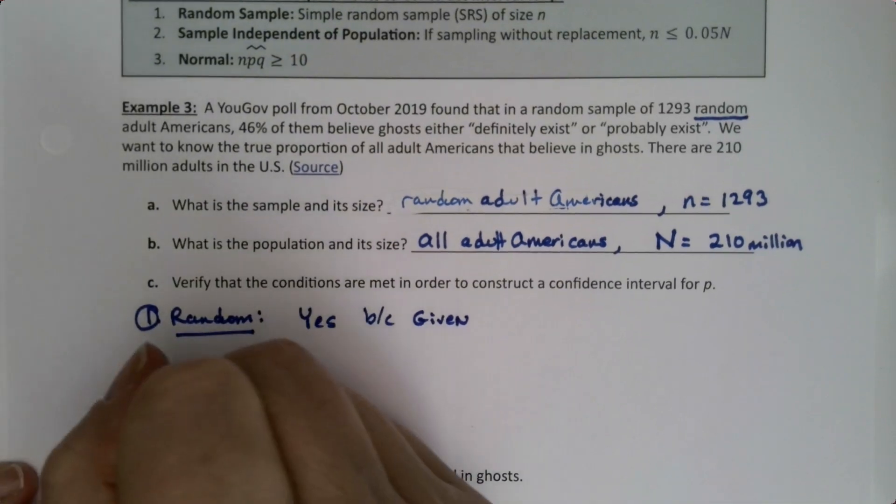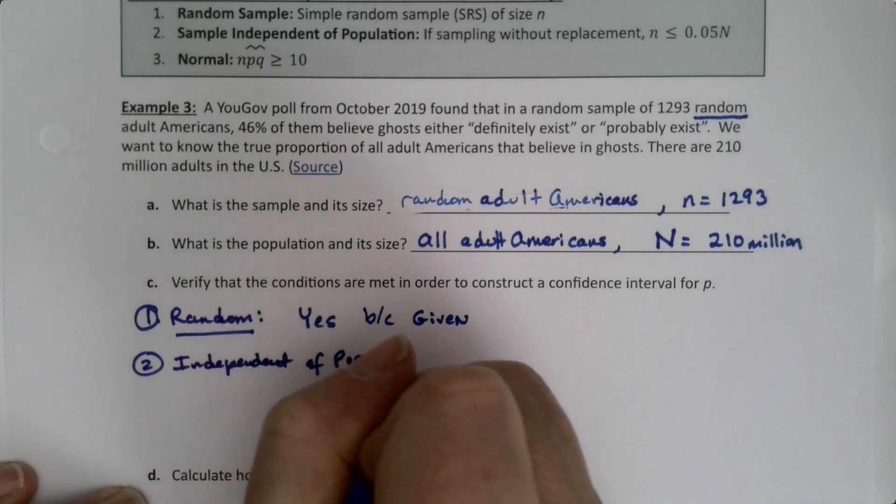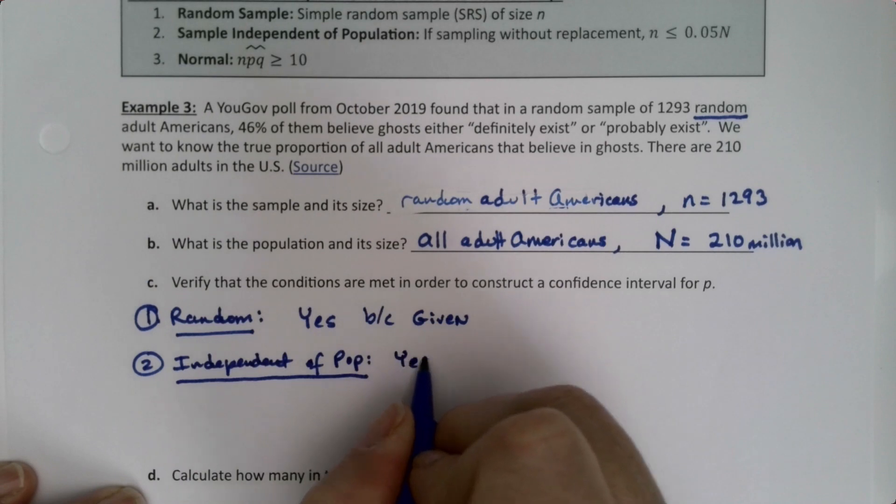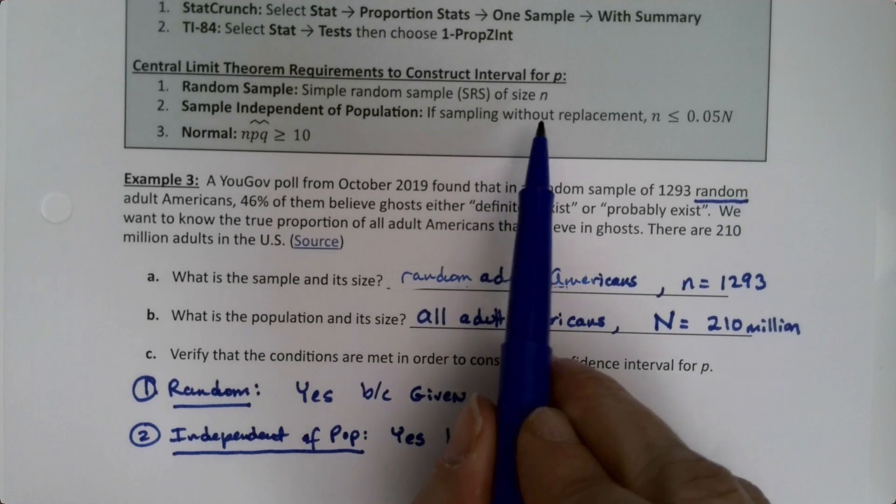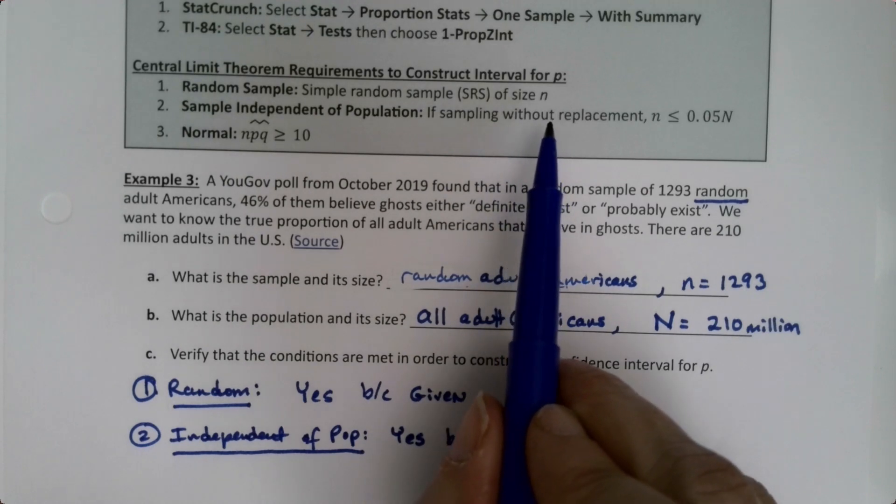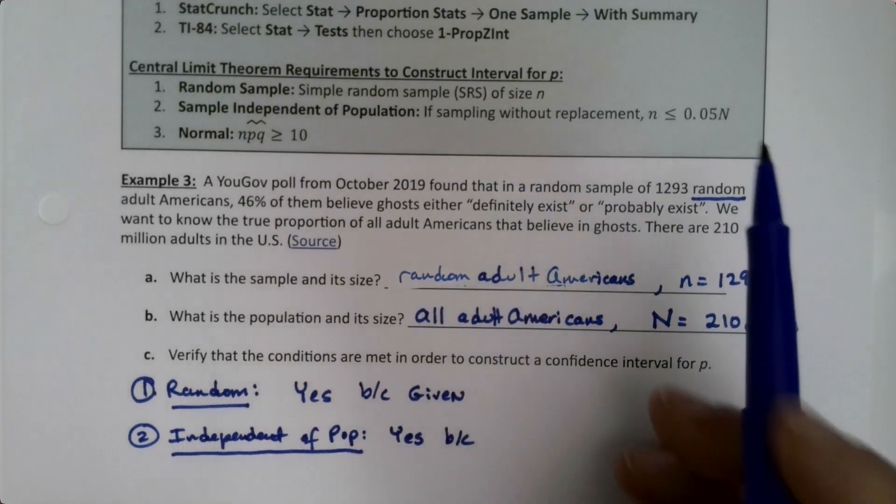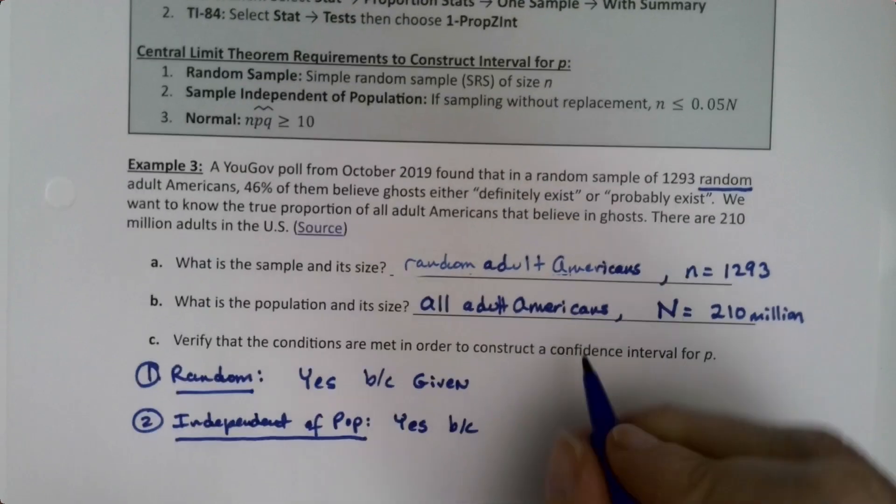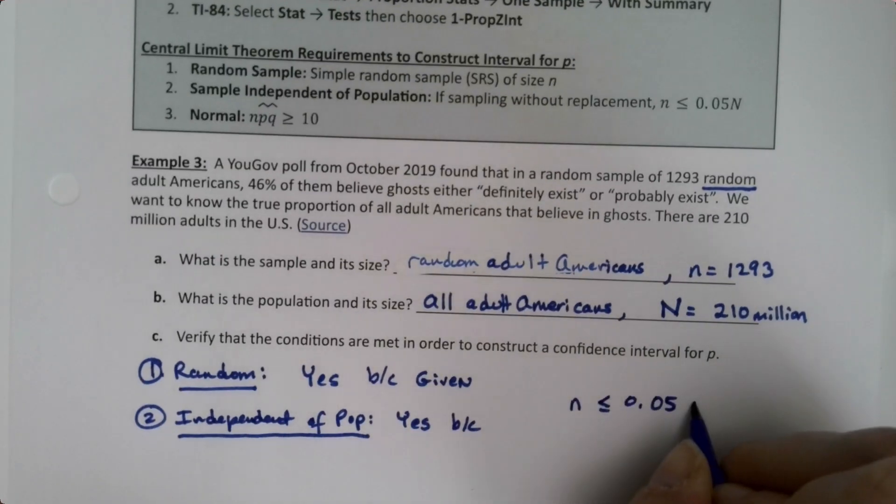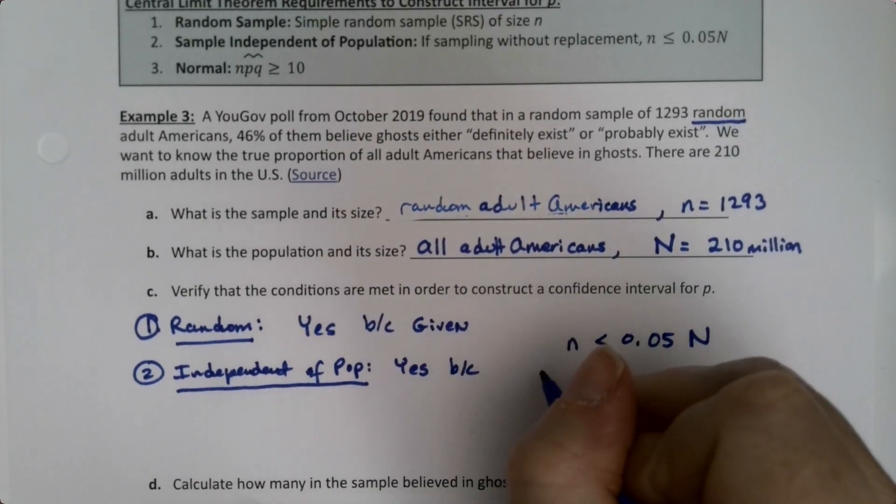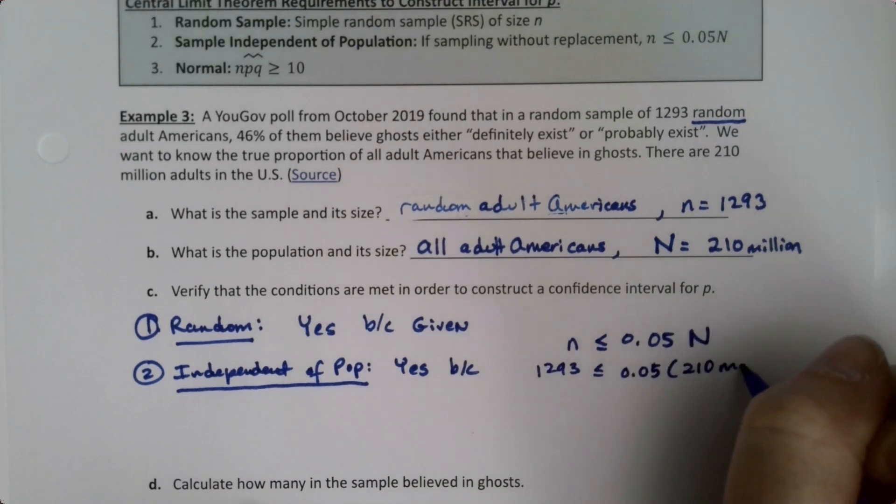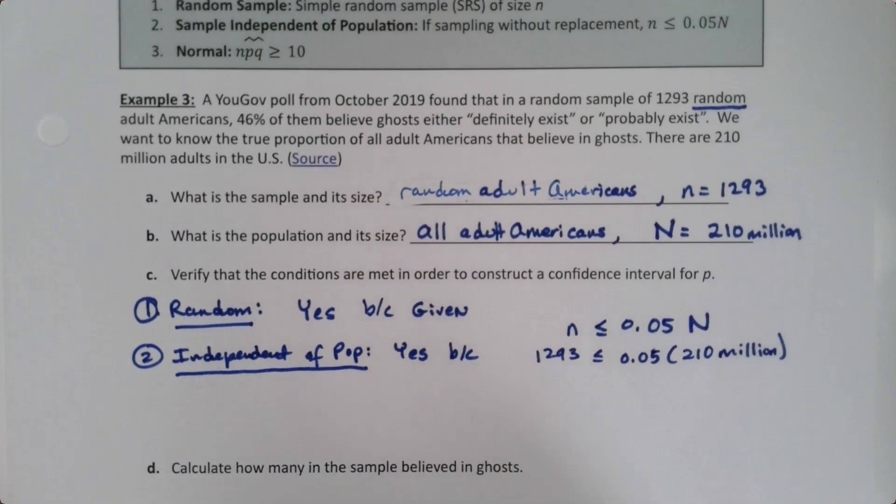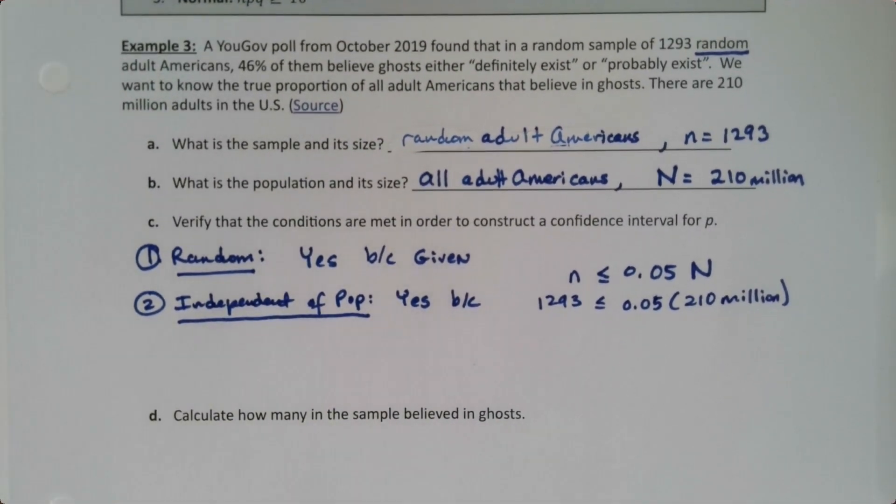Step two: independent. Technically it's independent of the population. This is yes, but I have to prove it. If we're with replacement, it's automatically independent. But if it's without replacement, which this is assumed to be, we need little n (1293) to be less than or equal to 0.05 of capital N—less than five percent. So 1293 must be less than 0.05 times 210 million.